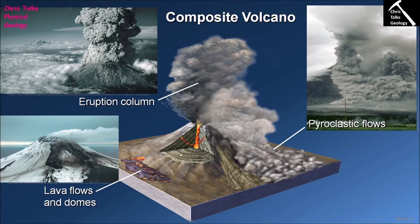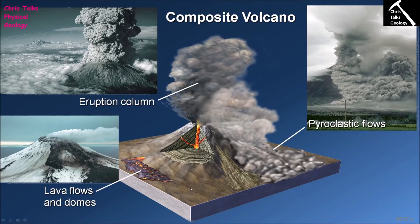As part of the eruption, composite volcanoes also produce lava. The lava can exit either from the crater, from a vent on the sides, or in some cases from the base of the volcano — it simply takes the easiest path. The lava will often be intermediate in composition and quite viscous, so it tends to flow slowly and won't cover huge areas. Lava flows from composite volcanoes are typically limited to the volcano itself, unlike mafic volcanoes where low viscosity allows lava to flow over large distances.